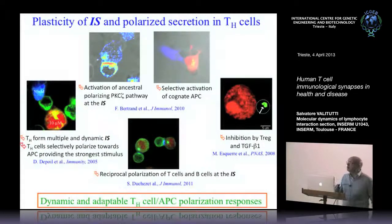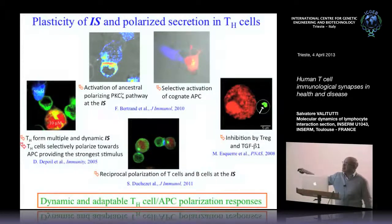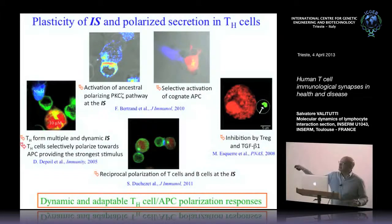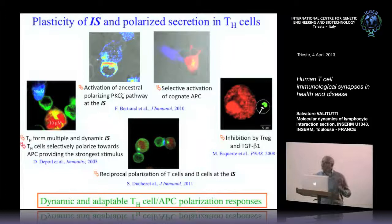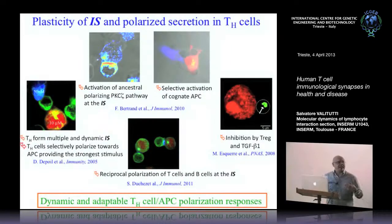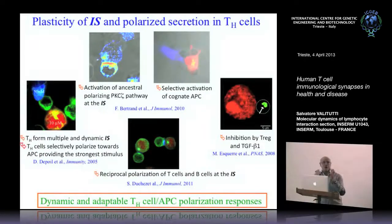A student in the lab, David Dupuallo, who is now working with Michael Dustin, showed that when helper T-cells are forced to interact simultaneously with different antigen-presenting cells offering different strengths of antigenic stimulation, the helper T-cells choose among the different cells and polarize their secretory machinery, their CD40 ligand, and their cytokines towards the APC offering the best antigenic stimulation at any given time.